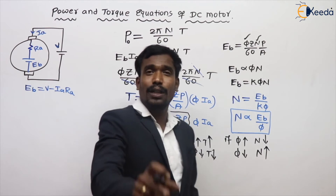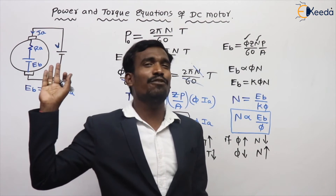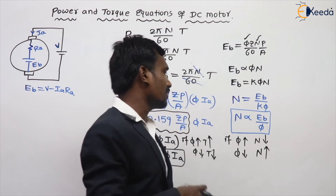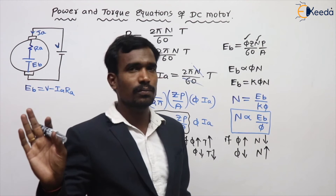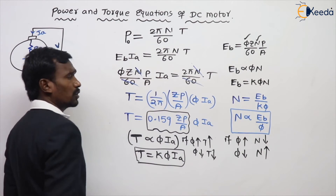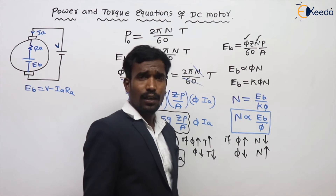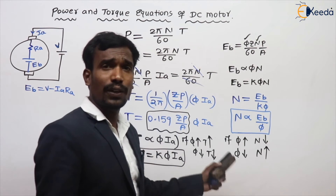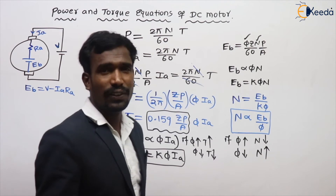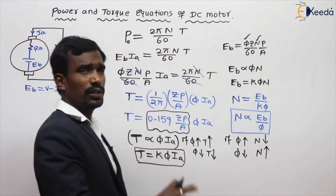Torque and speed are very important for the motor — there is a question on speed and torque of DC machine in every competitive exam. Torque is directly proportional to phi into IA, and speed is directly proportional to EB by phi. Speed is inversely proportional to flux whereas torque is directly proportional to flux.